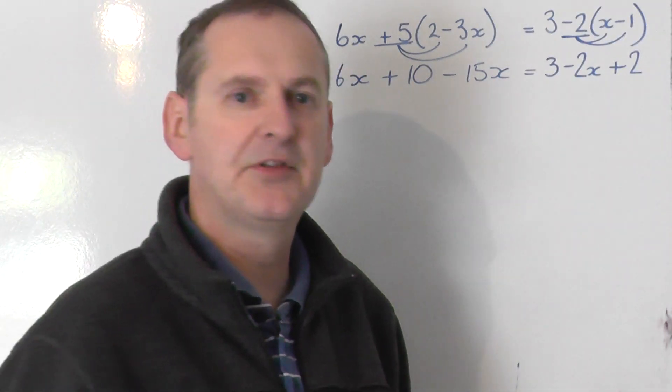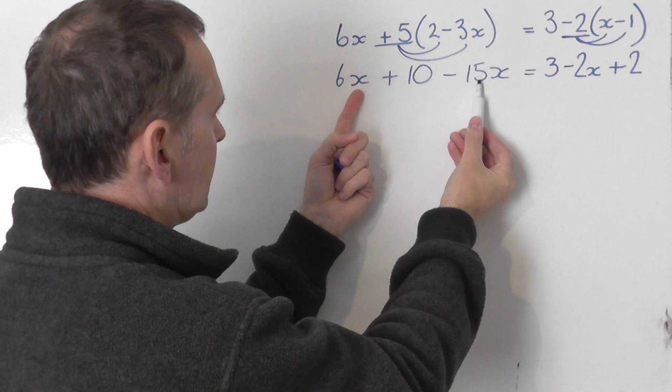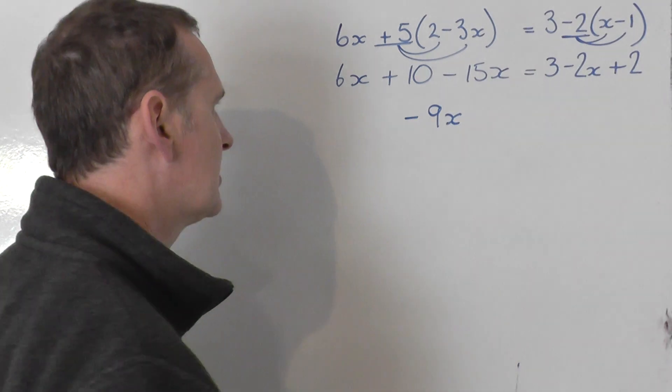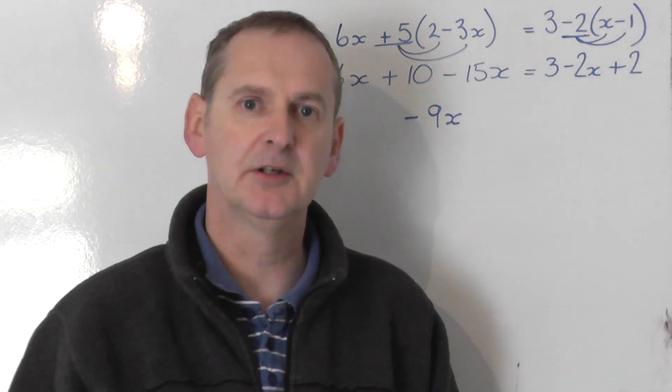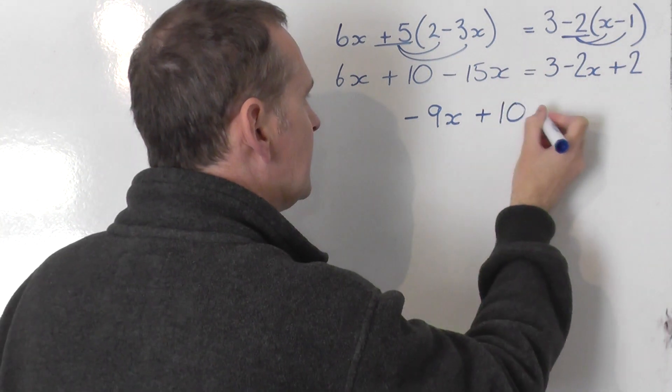Let's tidy up a little bit on both sides. On the left hand side I can combine these x's. Because 6x with minus 15x we get minus 9x using number line or army method. The plus 10 remains unchanged.